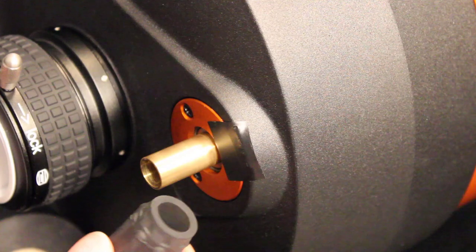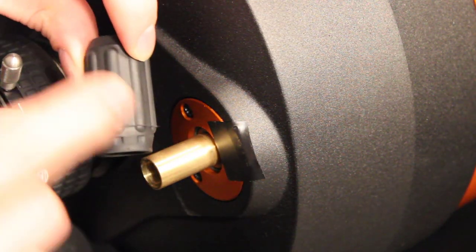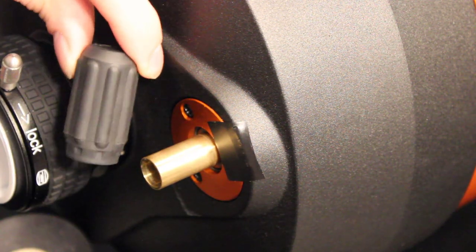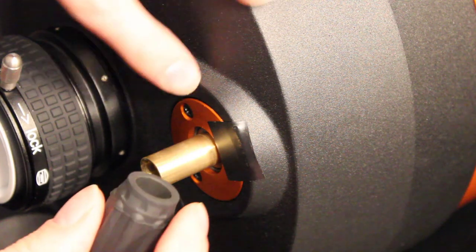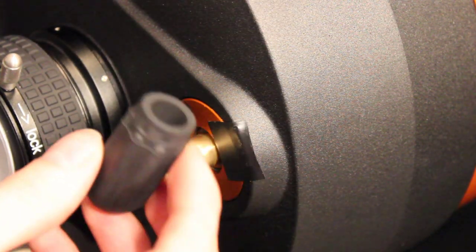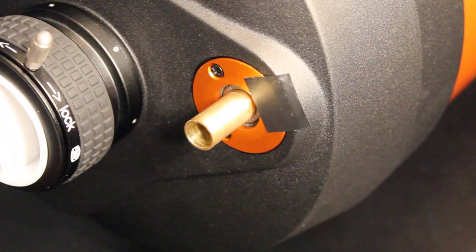And by doing it that way, if you use pliers, you're probably going to mess up this rubber a little bit. So by doing it this way, not only does it not mar your orange ring, but it also keeps your focuser cover in good condition too.